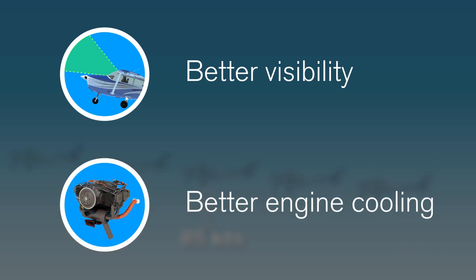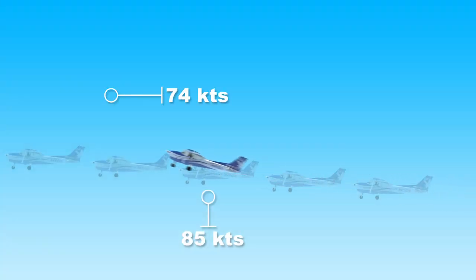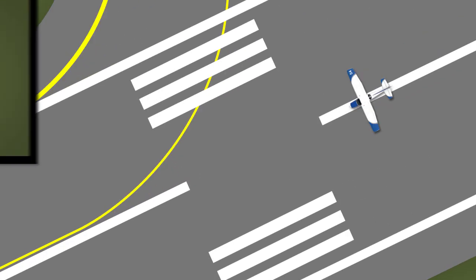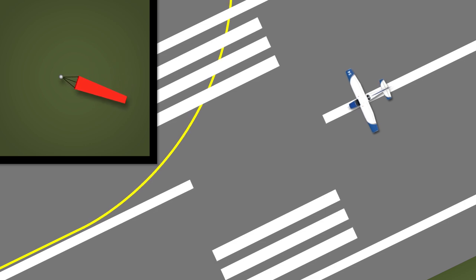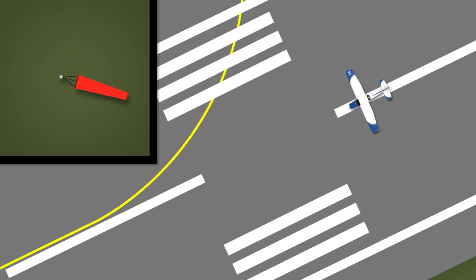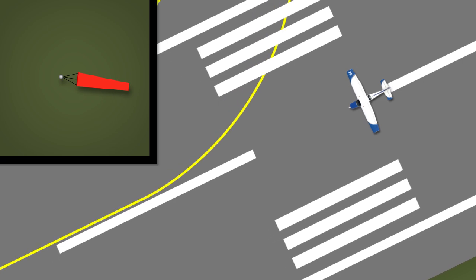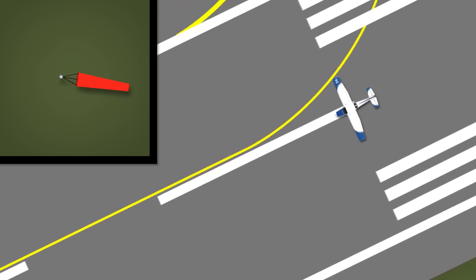If you ever need to climb at a higher vertical rate of climb, do not hesitate to increase the pitch and climb at 74 knots instead. Ideally, a pilot always tries to take off with a direct headwind; however, this very rarely happens. Almost always, there will be some crosswind component. Since crosswind takeoffs occur so often, it's important to develop this skill relatively early in your flight training.